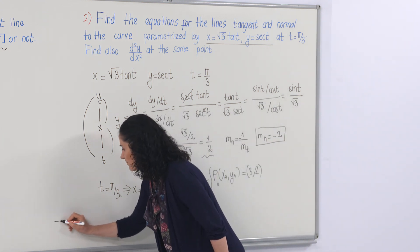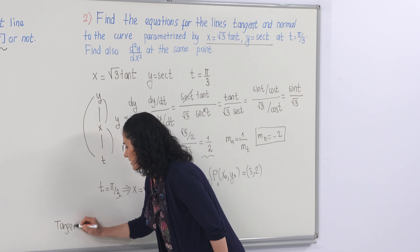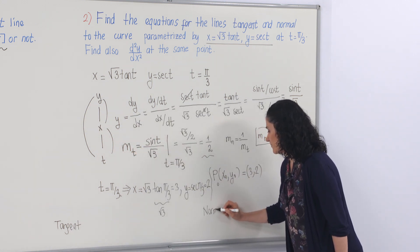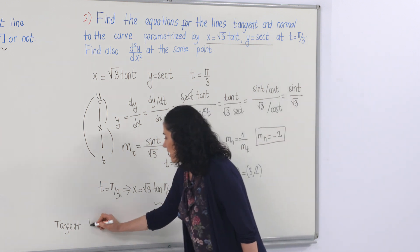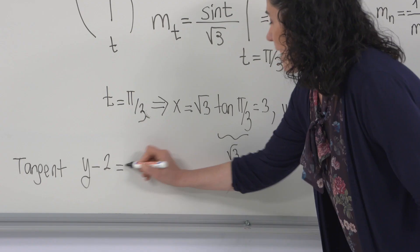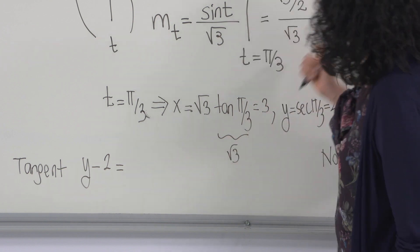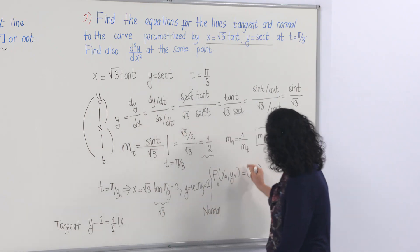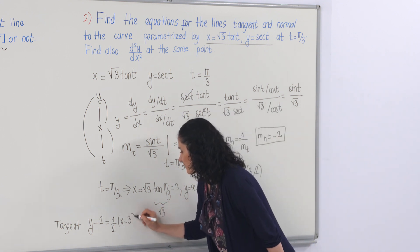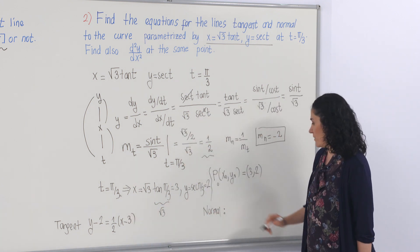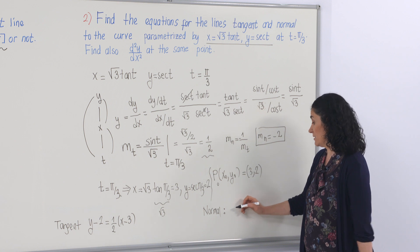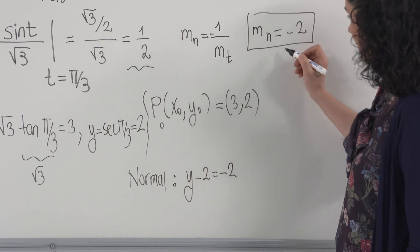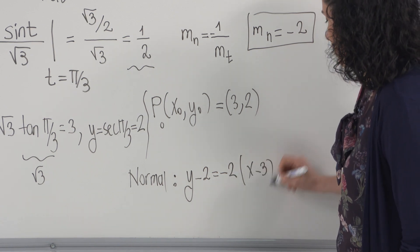The tangent line equation is y − 2 = (1/2)(x − 3). The normal line equation is y − 2 = −2(x − 3).